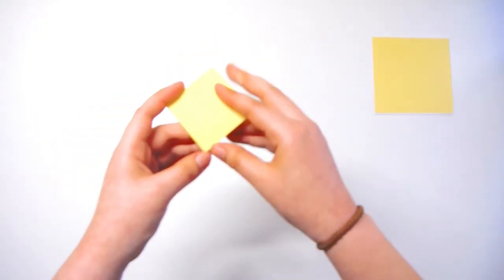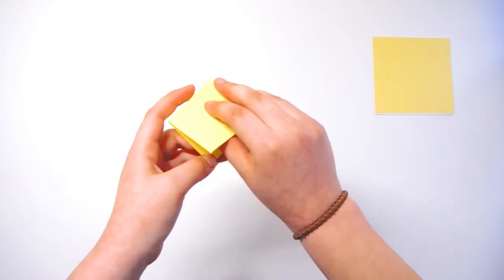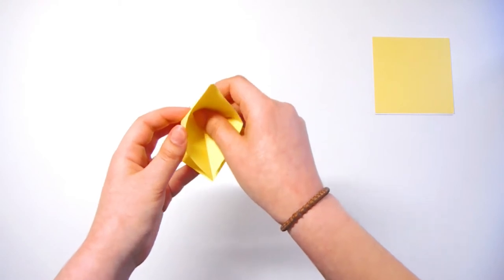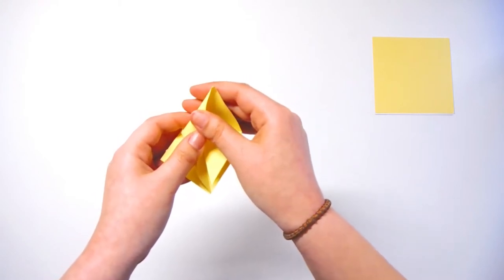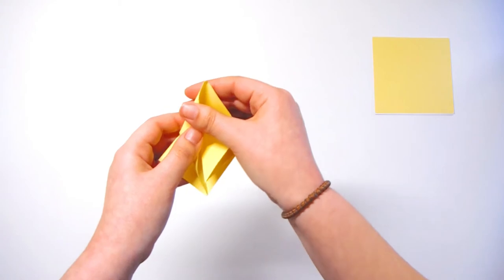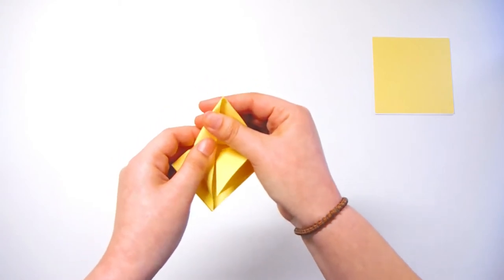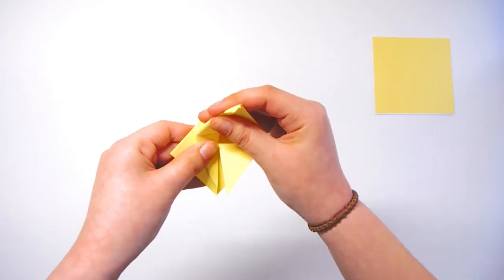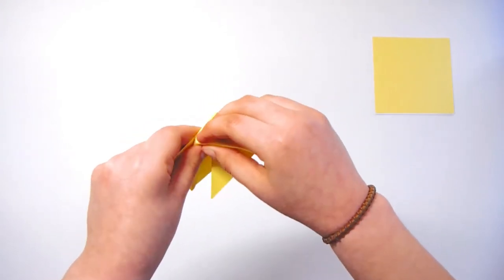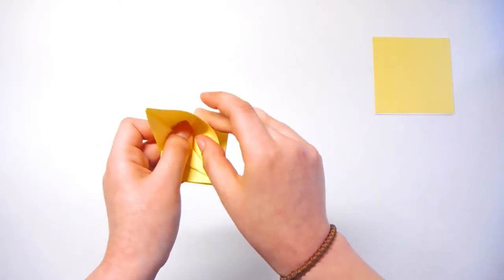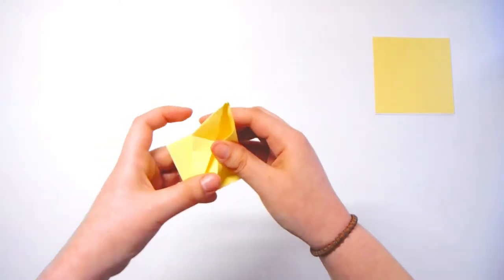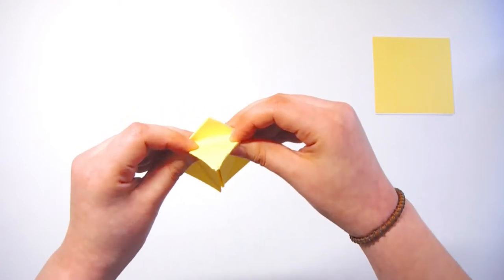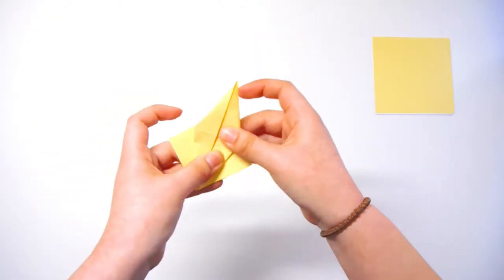Next step we want to do is we want to take this flap and we want to open it up like this. This part can be a little tricky so just, you know, take your time, be patient and what you want to do is you want to fold this inwards, the edge of the paper meets up with this inside crease and you just want to fold it down and then you want to do the same thing for the other side so that it folds and then it should fold flat just like that.